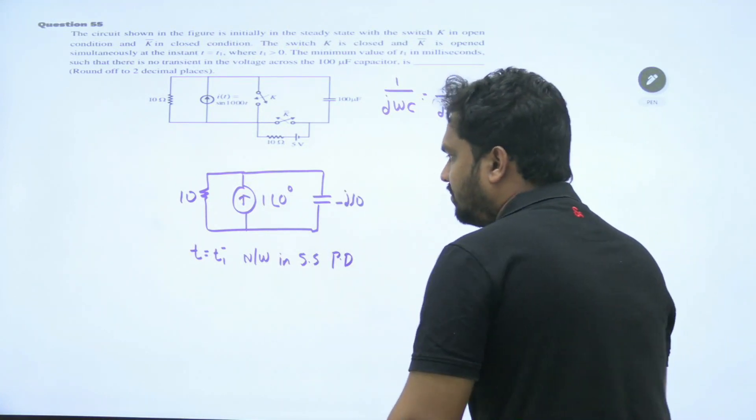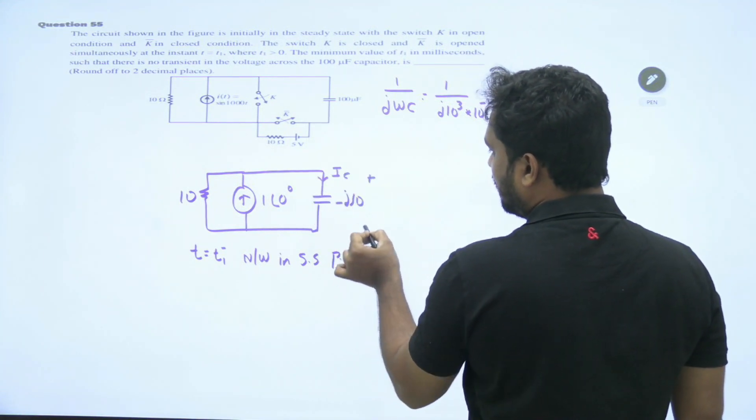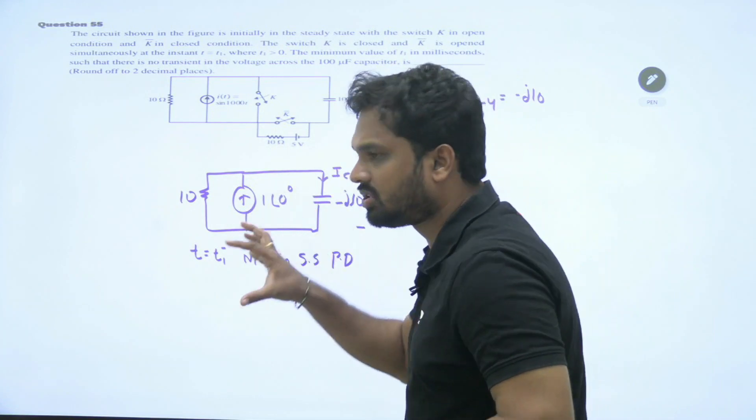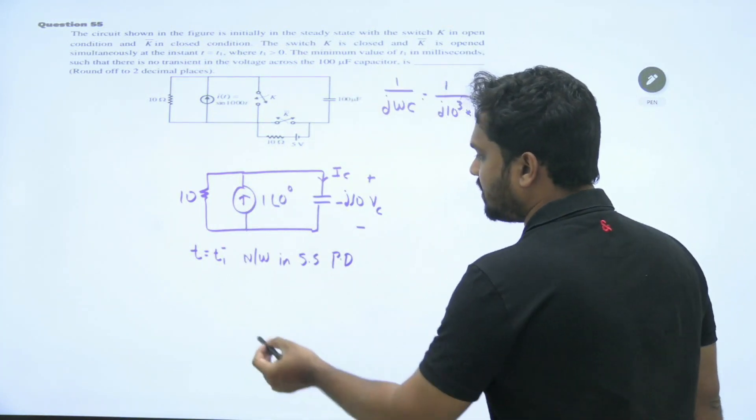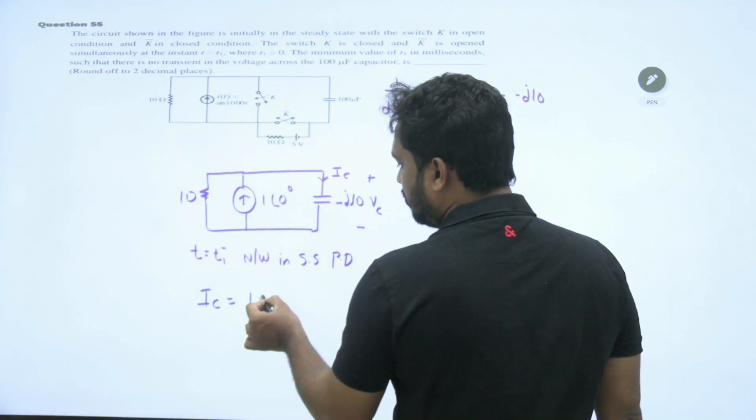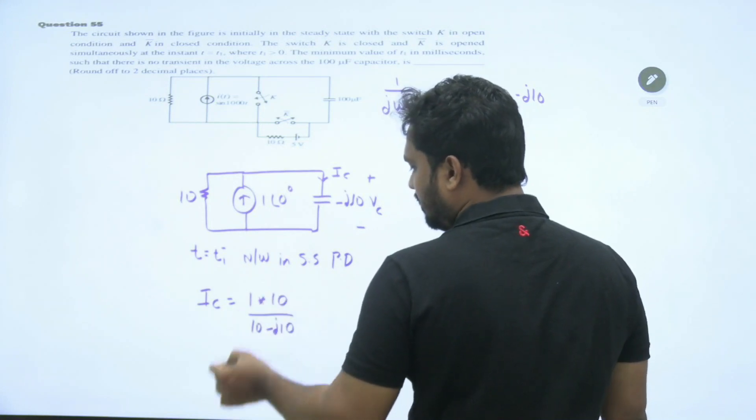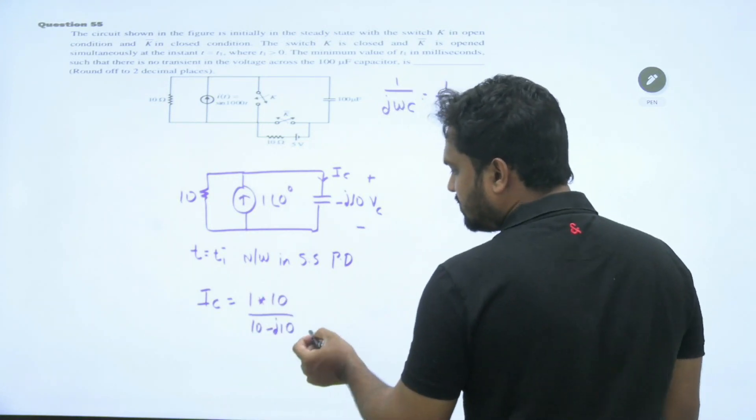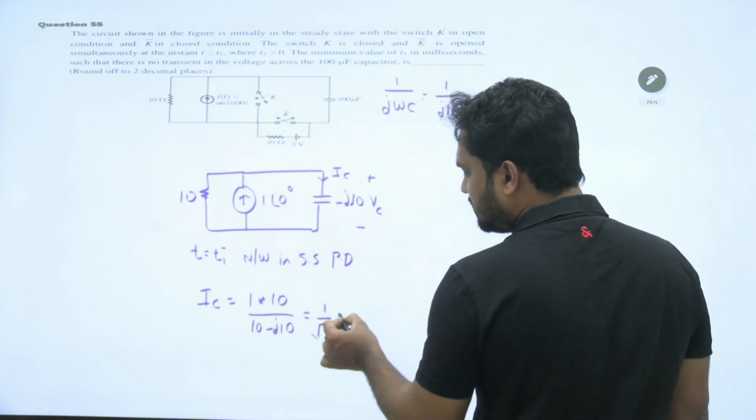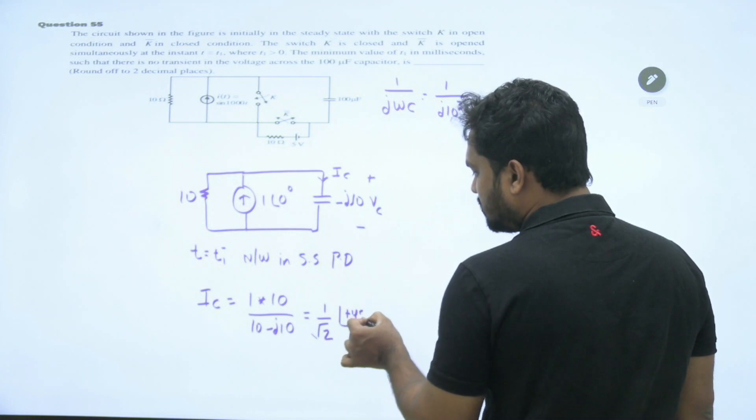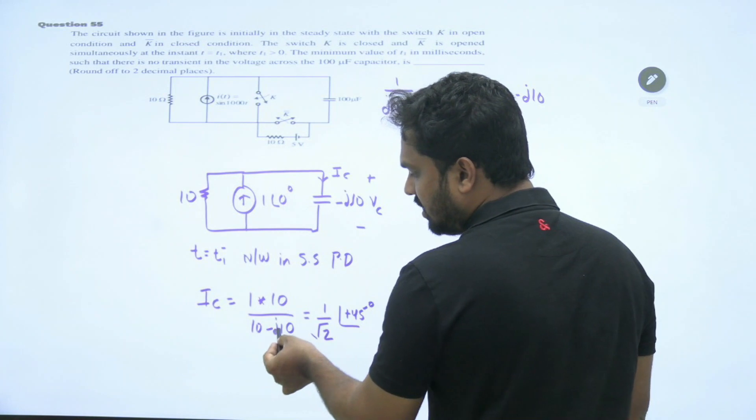Minus j 10. Now this is your IC and VC in the steady state. So first part, I am finding my IC and VC values. What is my IC? 1 into opposite impedance by total impedance. Real axis positive, imaginary axis negative is theta. So 1 by root 2 denominator by minus theta, numerator it is plus 45 degrees. Tan inverse B by A. Denominator real axis positive, imaginary negative means minus theta. In the denominator, numerator it will be theta. 10, 10 cancels, 1 by root 2 is the magnitude.